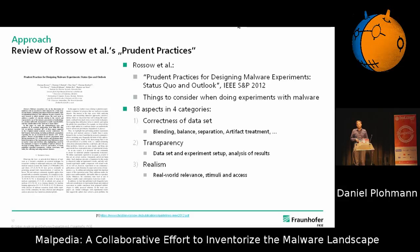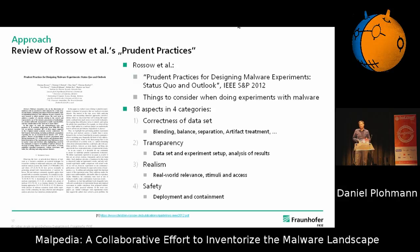Then you want to do realism, because you can live in the ivory tower and do isolated experiments — but if you want other people to use it, you have to look at relevance and the real world. The experiments should be designed in a way that's similar to how malware is encountered in the wild. And finally, safety is also something to consider, because if you're working with malware, you might potentially pose harm to outside parties, so you have to think about deployment and containment.